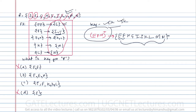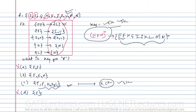The closure of EFH determines all attributes in the relation, so EFH is a candidate key and also a super key. Option C, EFHKL, can also determine everything, but it is only a super key — not a candidate key — because EFH is a proper subset that already determines everything. The answer is option B.